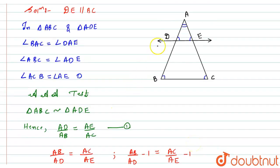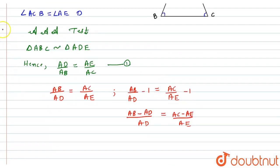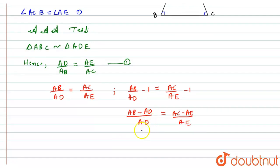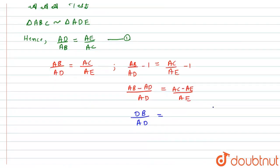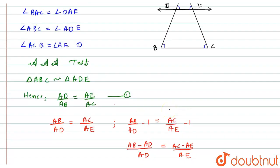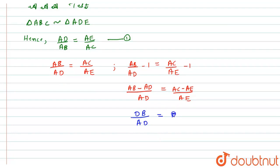If we look at the figure, AB minus AD equals DB. So we can write DB upon AD equals DB upon AD. Similarly, AC minus AE equals EC. So here we can write EC upon AE. Let this be equation number two.